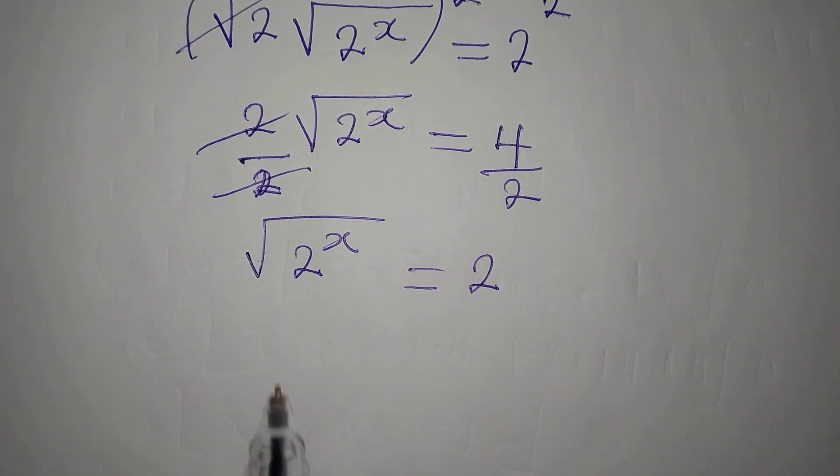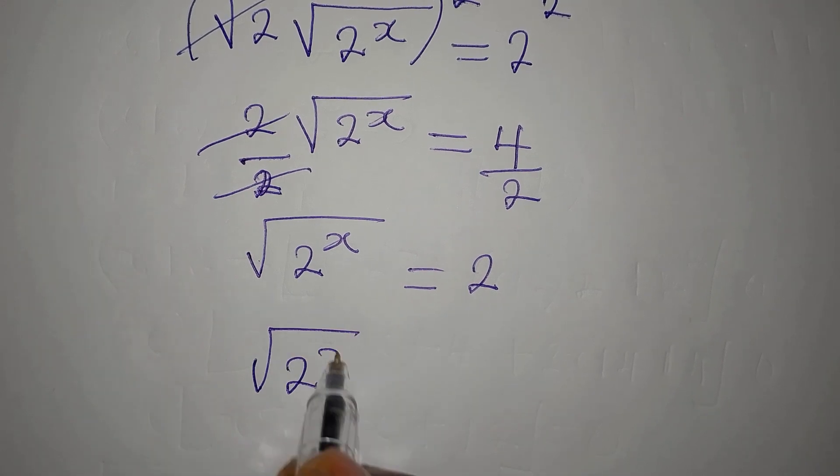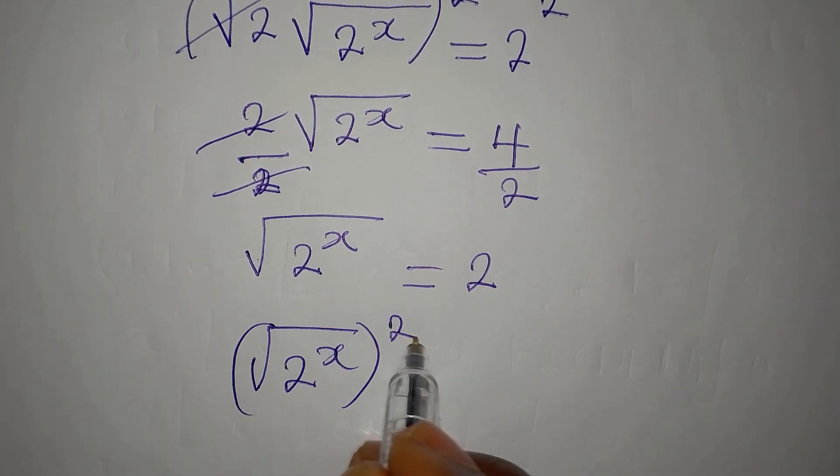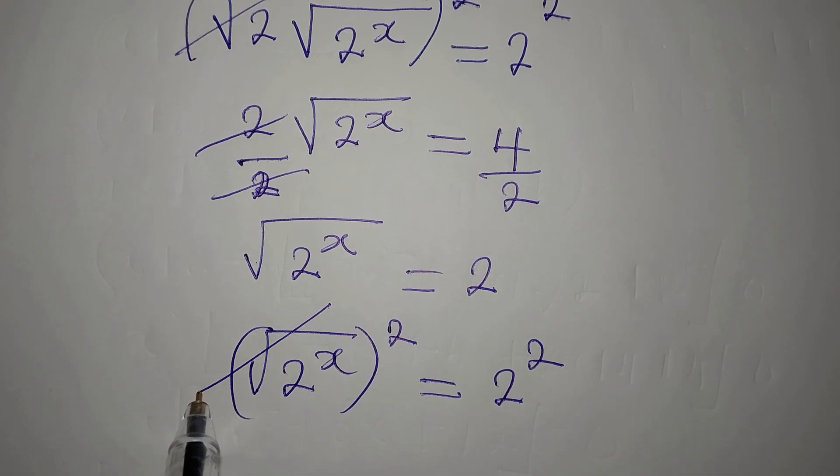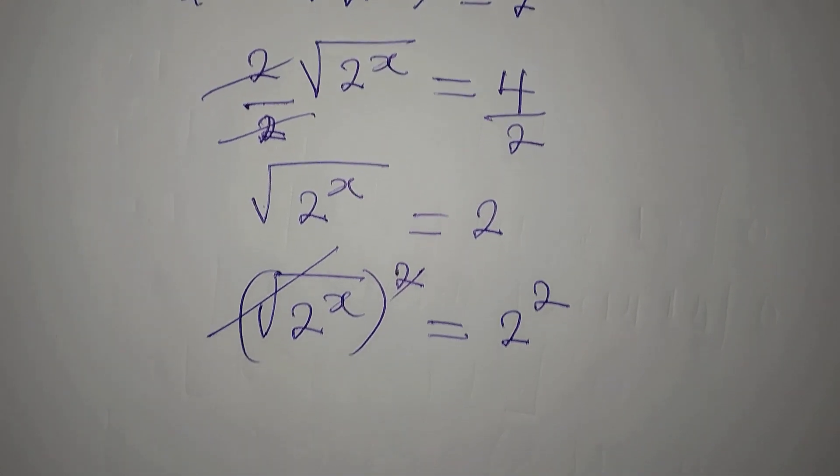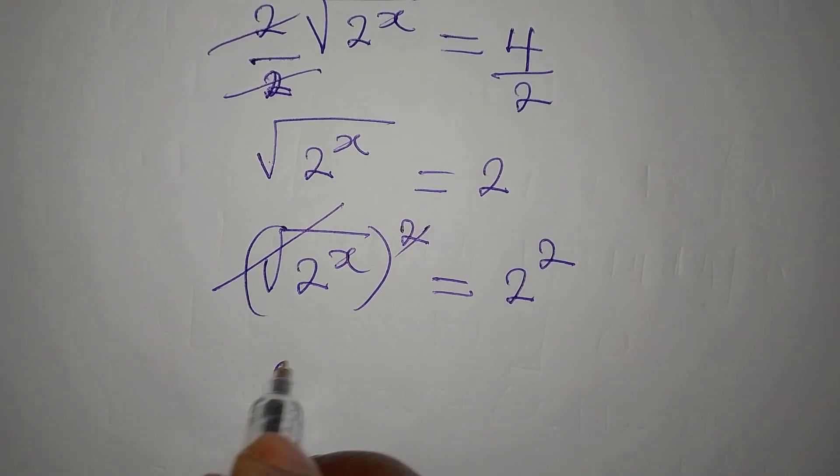Now I need to remove this square root, so I have square root of 2 to the power of x. This will be squared equals 2 squared. This will go here and then we now have 2.